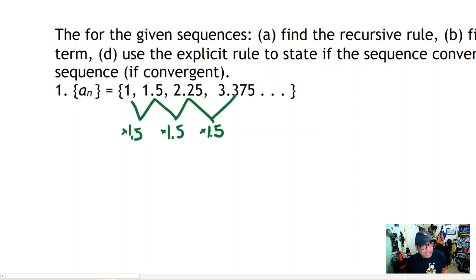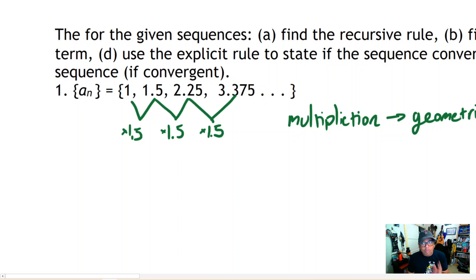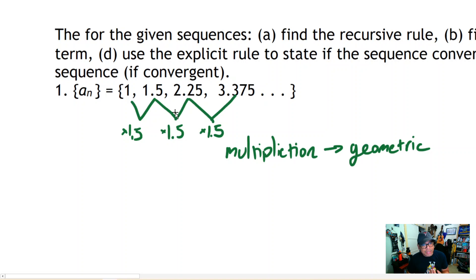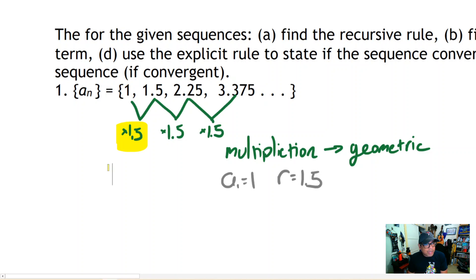If you use a multiplication pattern to get from every member of the sequence to the next, you're always just multiplying by 1.5. That's what you're looking for — a really clean way to get from one member of the sequence to the next. The rule here is multiplication, which implies we have a geometric sequence. The first term is 1 and the geometric ratio is 1.5.